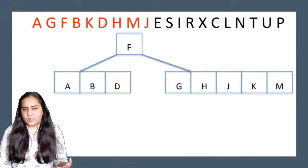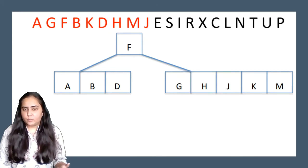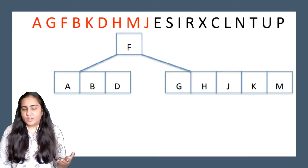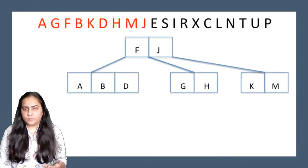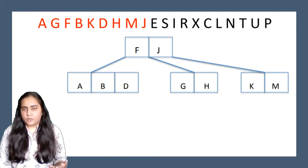Next we are inserting J. When inserting J, we have the same problem — the node is full with five keys and only four are allowed. So we split it up. The key that falls right in the middle after sorting is J, so J goes to the parent node. On the left of J there will be G and H, and on the right of J there will be K and M.